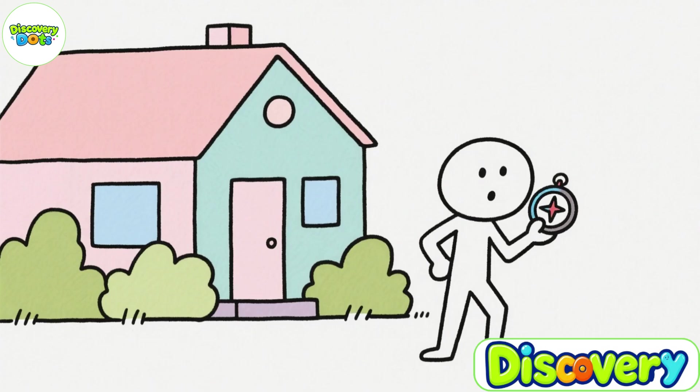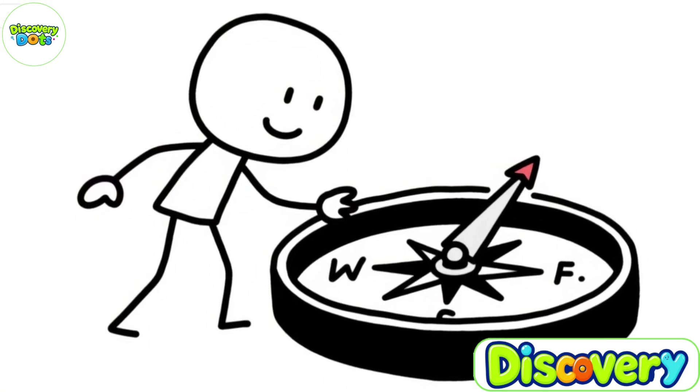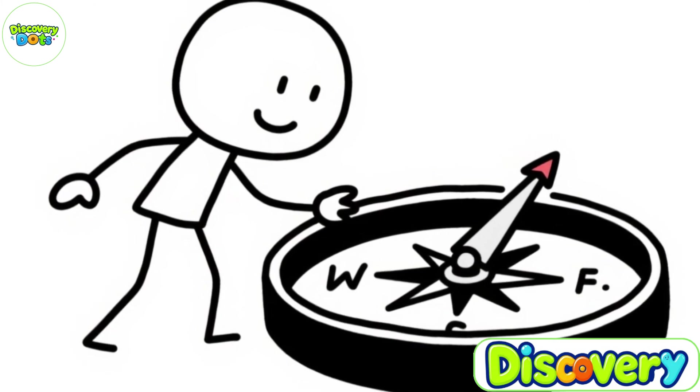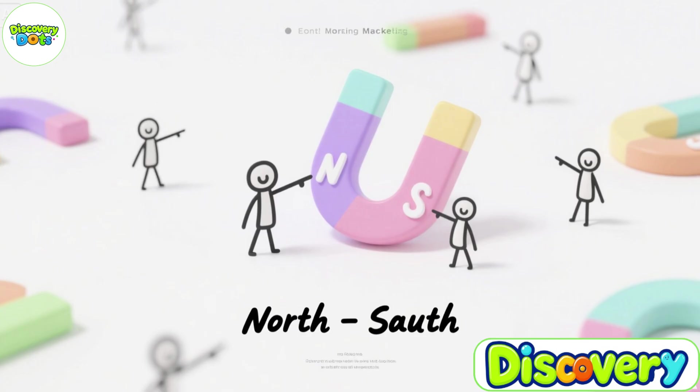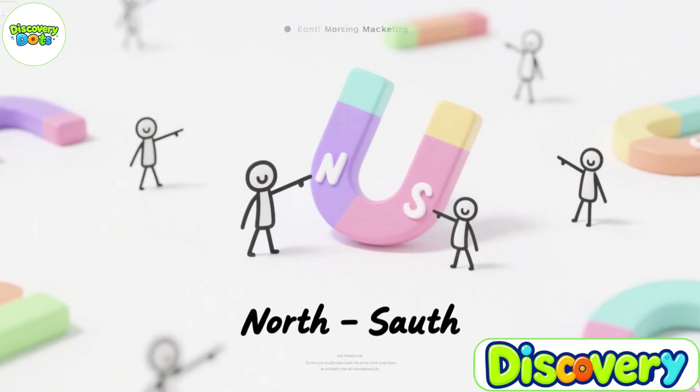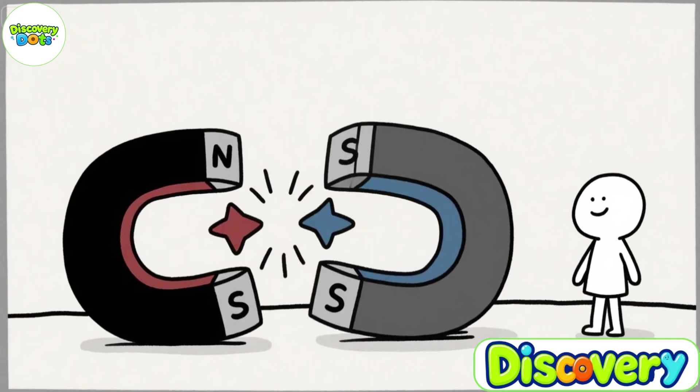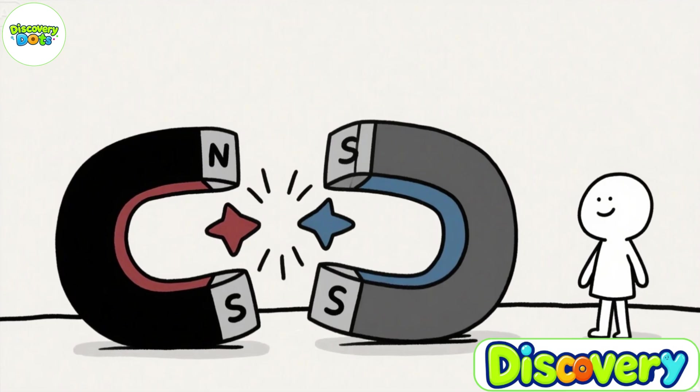To understand why, we need to know how a compass works. A simple compass is essentially just a small magnet mounted on a pivot. This magnet has two ends, one called the north pole, the other the south pole. The basic rule of magnets is: opposite poles attract, while like poles repel.